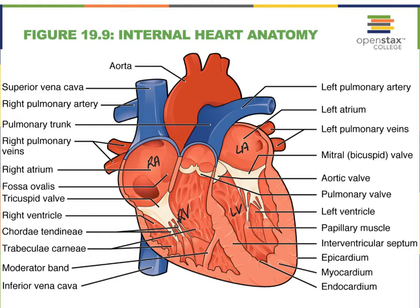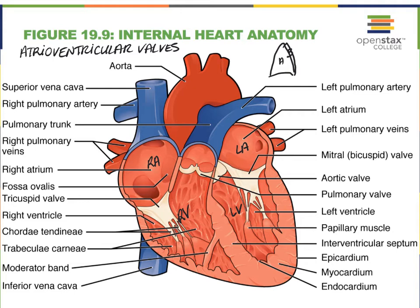The name mitral refers to the mitre of a bishop. You've seen the pope or bishops wear this hat that kind of looks like this. You can think of it as having an anterior side and a posterior side — two portions to it. That's kind of what the mitral valve looks like.